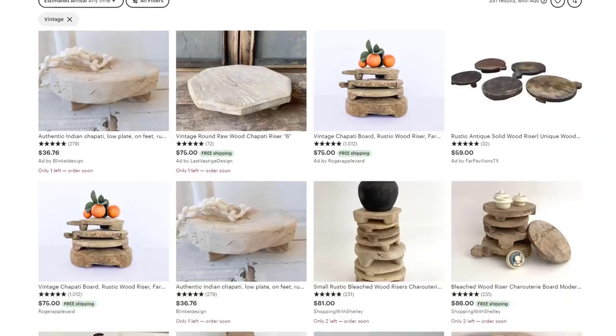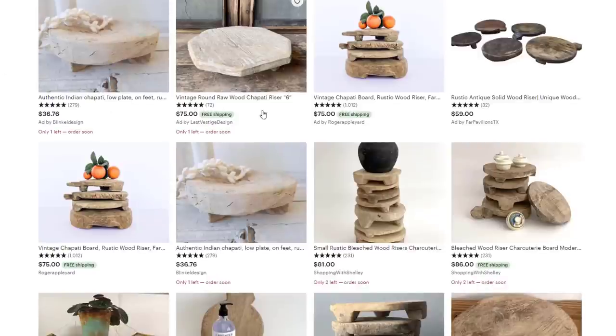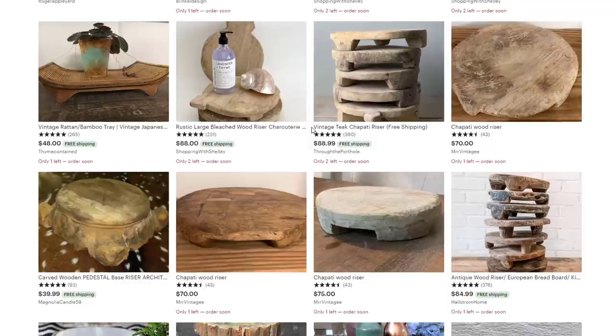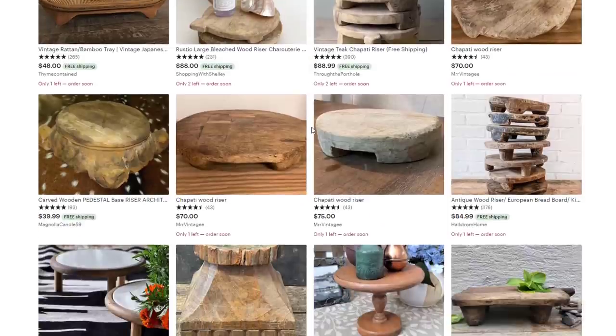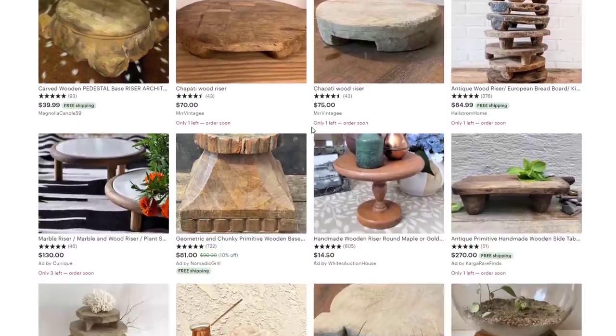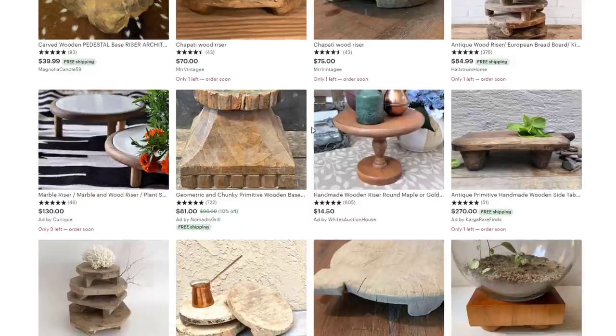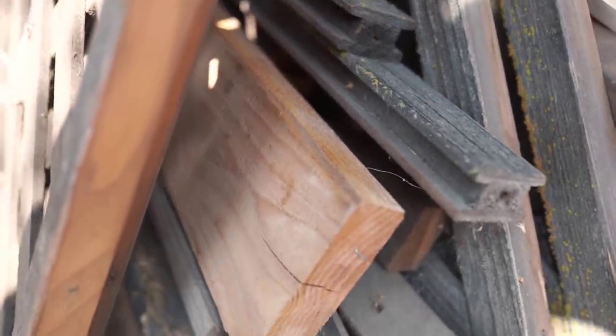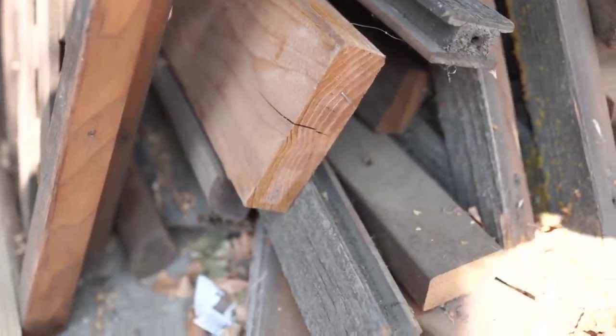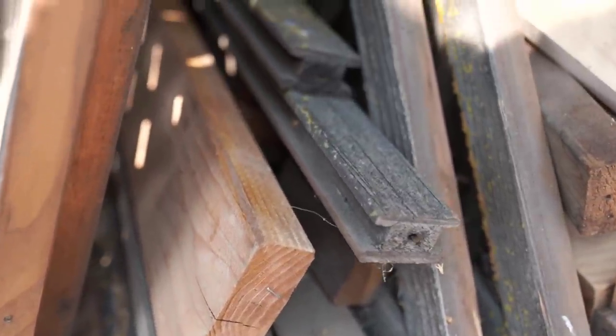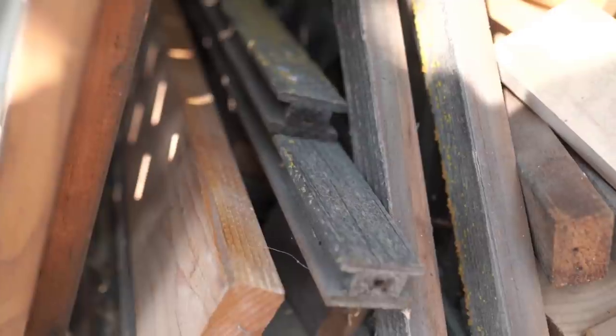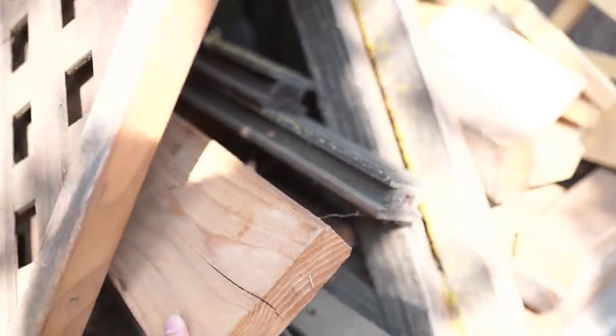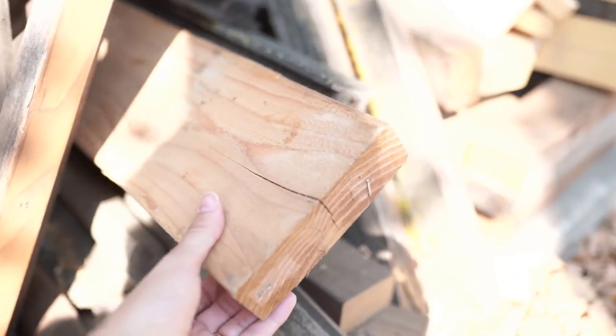These wood risers are online on places like Etsy. You can find them in antique stores and they can cost a pretty penny. They're usually about an average of $75 on up and they are vintage, really worn and really cool looking but they're a little pricey for a soap holder or candle holder in my opinion. So I'm going to go through my wood pile out back and see if I can put something together to resemble that look.